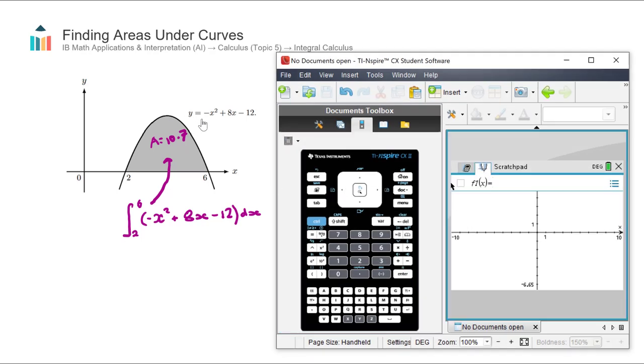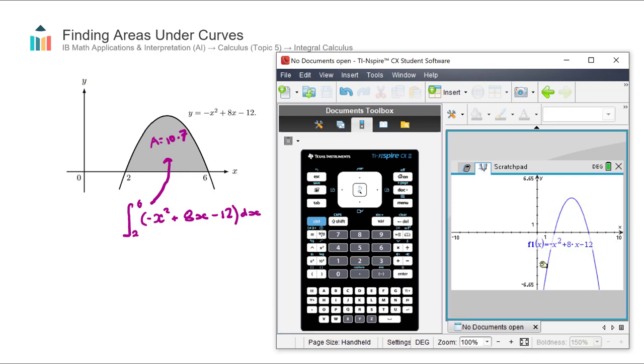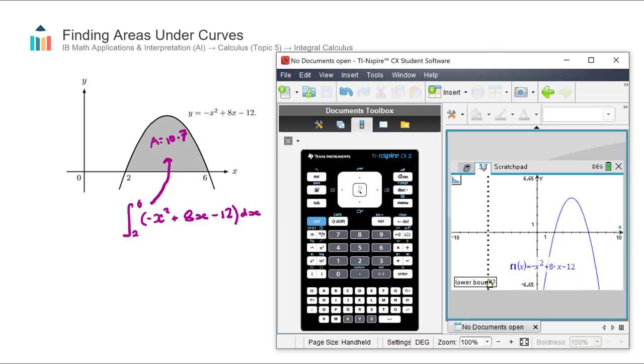Let's do the second way on the calculator. Now we go across to the graphing section and I'm going to enter this equation into my graphing section here: negative x squared plus 8x subtract 12. Hit enter, so there we have this curve. I want to find the area between two and six.